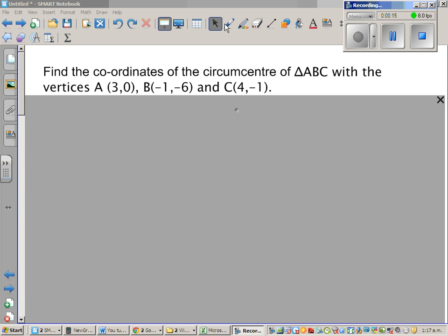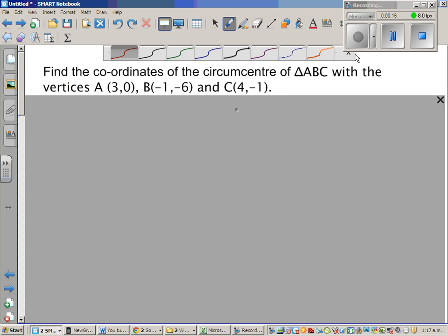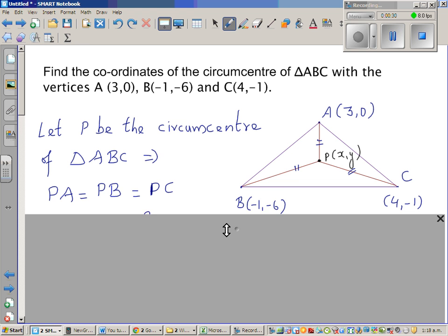Now circumcentre is a point which is equidistant from all three vertices, or is a point from which you can draw a circle which passes through all three vertices. So I've drawn a diagram. These are arbitrary points, not according to the exact coordinates.